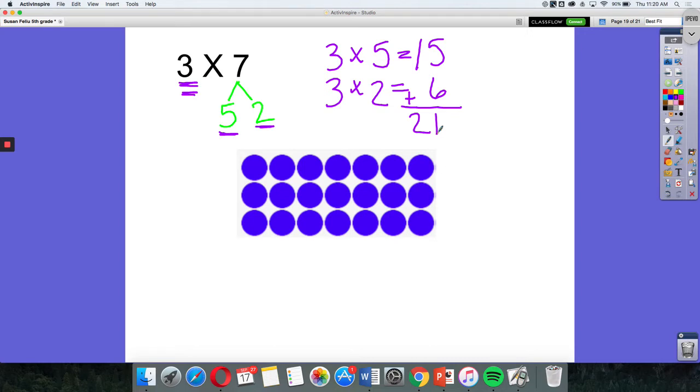So when I break this apart using the distributive property, what I'm actually saying is 3 rows of 5, and then 3 rows of 2. And of course, I'm adding those together, and I'm still getting 21. I'm just breaking apart the 7 to make this multiplication easier for me.